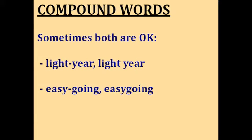Some words have more than one form. For some words, both the open form and the hyphenated forms are acceptable, as in the word light year — that's the distance that light can travel in a year. And for some words, both the hyphenated and the closed form are acceptable, as in the word easygoing, which means relaxed.